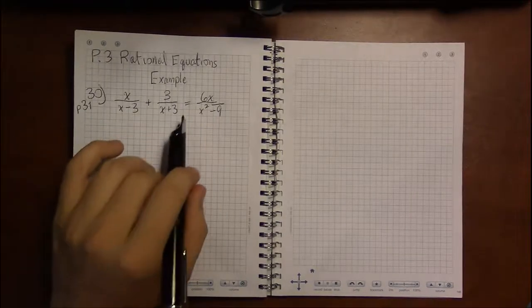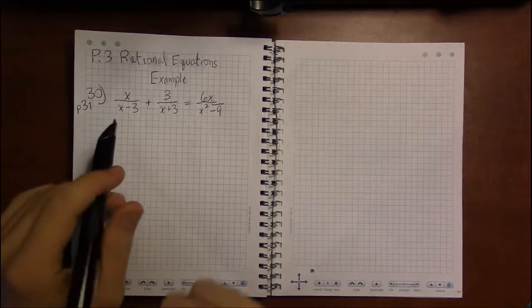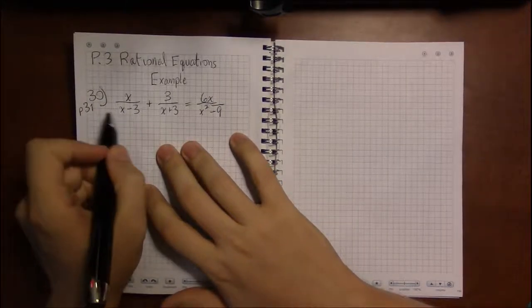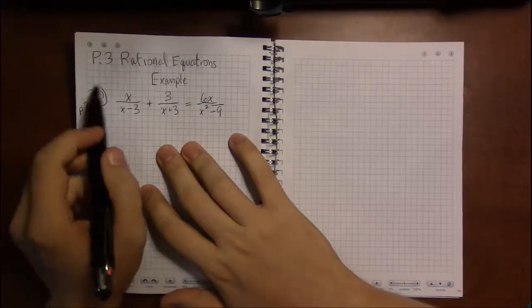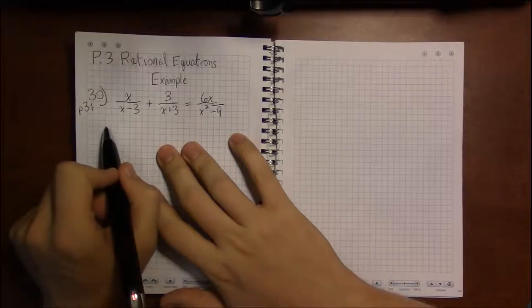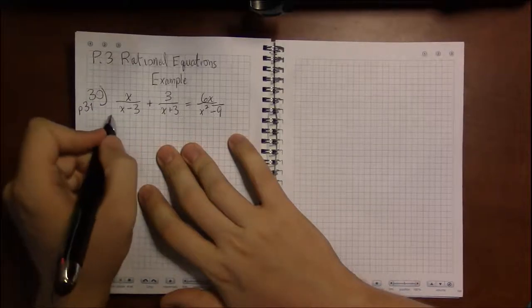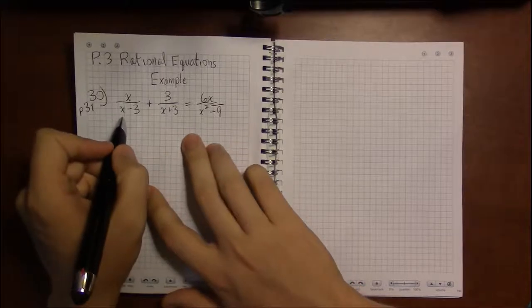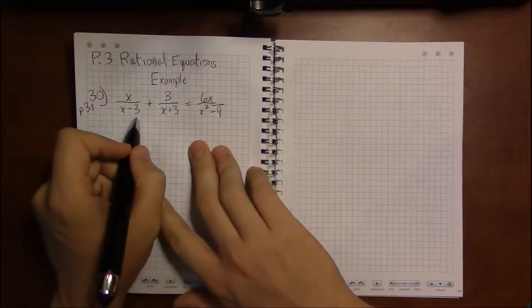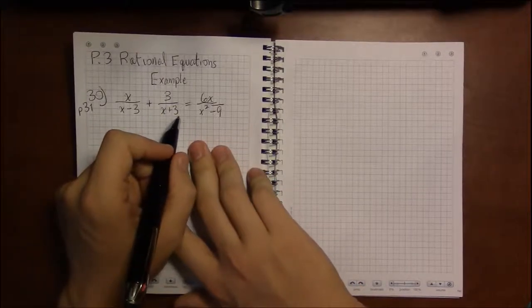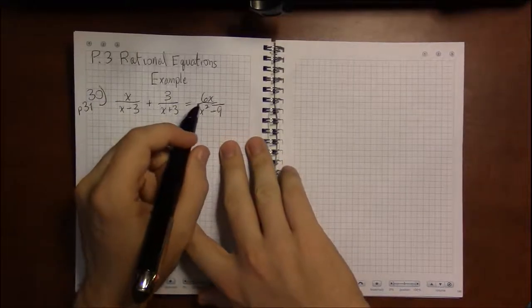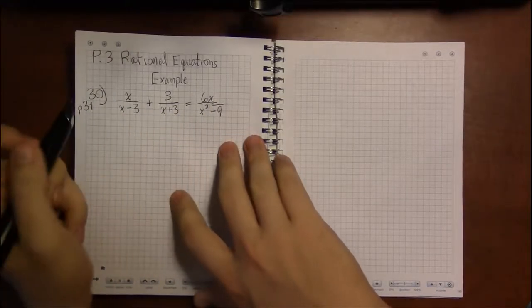Alright, let's take a look at an example of rational equations. I'm looking at problem 30 in section P3, which happens to be on page 31, and we've got the equation x over x minus 3 plus 3 over x plus 3, and this equals 6x over x squared minus 9.